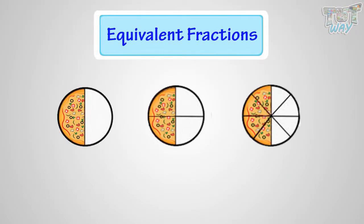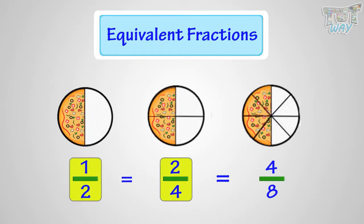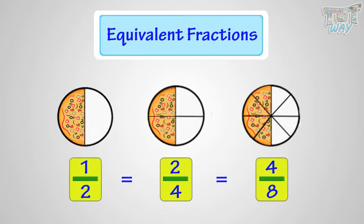Here are three fractions. This is 1 by 2 pizza. This is 2 by 4 pizza. This is 4 by 8 pizza. What you see here? These are all the same parts of a whole pizza, or they are all equal. That is, 1 by 2 equals 2 by 4 equals 4 by 8, as they are all representing the same portion of this pizza. So they are equivalent fractions.